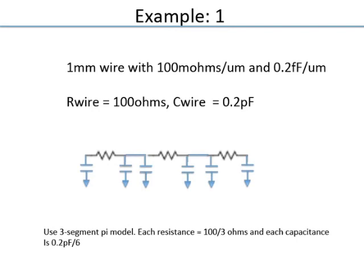For example, a wire that is 1 mm long with 100 mΩ/μm resistance and 0.2 fF/μm capacitance has total resistance of 100 Ω and total capacitance of 0.2 pF. Breaking into 3 segments: each segment has resistance 100/3 Ω and capacitance 0.2/3 pF. In the pi model, that capacitance is split in half on each side. Adjacent half-capacitances at the same node can be combined since they are in parallel.